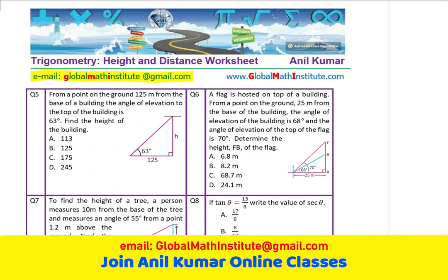I like you to now pause the video, read the question, answer and then check with the solutions. Question number 5. From a point on the ground 125 meters from the base of a building, so this is the base of the building, let's say B. Let's call this point as A, right? From a point on the ground 125 meters from the base of the building, the angle of elevation to the top of the building is 63 degrees. Let's call this as T. And 63 degrees is given to us. Find the height of the building.